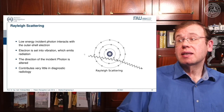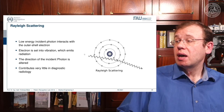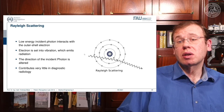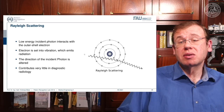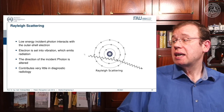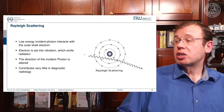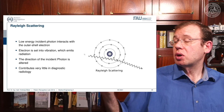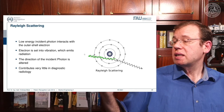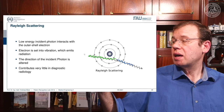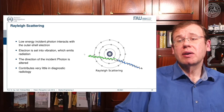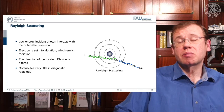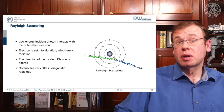The third effect is Rayleigh scattering, where a low-energy incident photon interacts with an outer shell electron. The electron is set into vibration, and because the vibrating electron emits radiation, the direction of the incident photon is changed. This is a deflection process — the wavelength comes in and the direction is altered. Rayleigh scattering contributes only very little in diagnostic imaging, but it describes certain deflection effects and also reduces the photon's energy along its path.